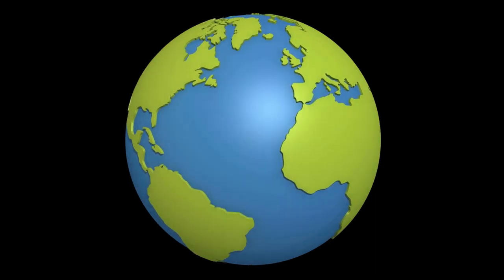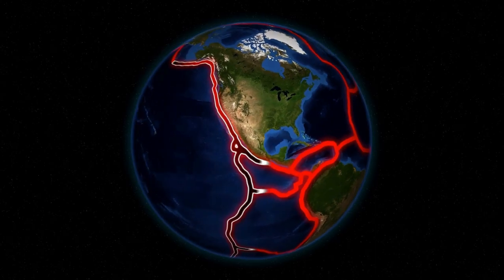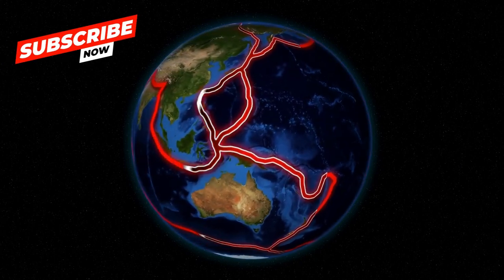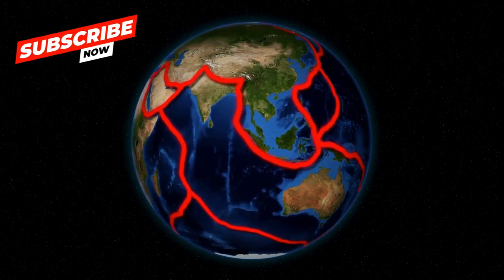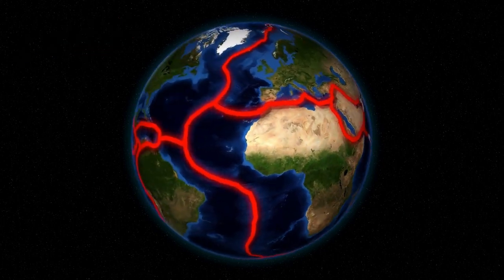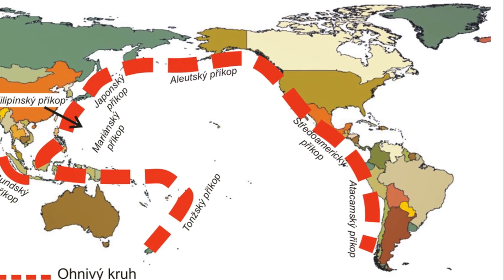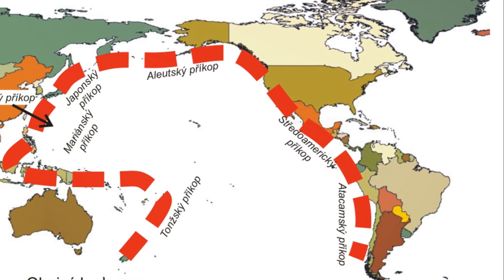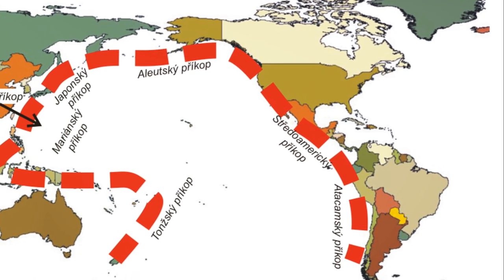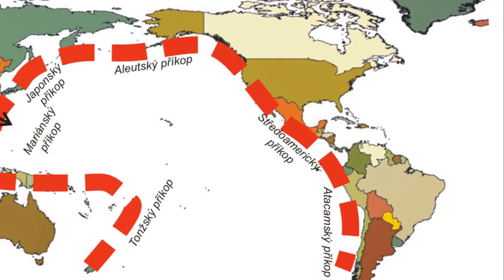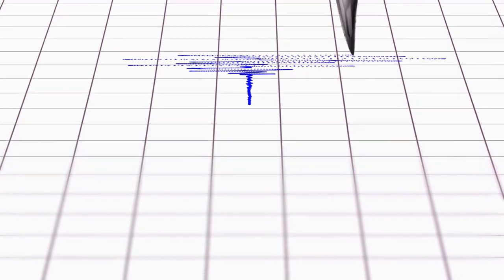Now, these earthquakes aren't randomly scattered around the globe. They follow certain patterns, occurring primarily along the major belts of the Earth's crust. The most significant of these is the Circum-Pacific Belt, also known as the Ring of Fire. It's a hotbed for seismic activity, stretching from the coasts of New Zealand around the edge of Asia, across Alaska, and down the western coasts of North and South America. So the Earth beneath us isn't as solid and unchanging as we might think.